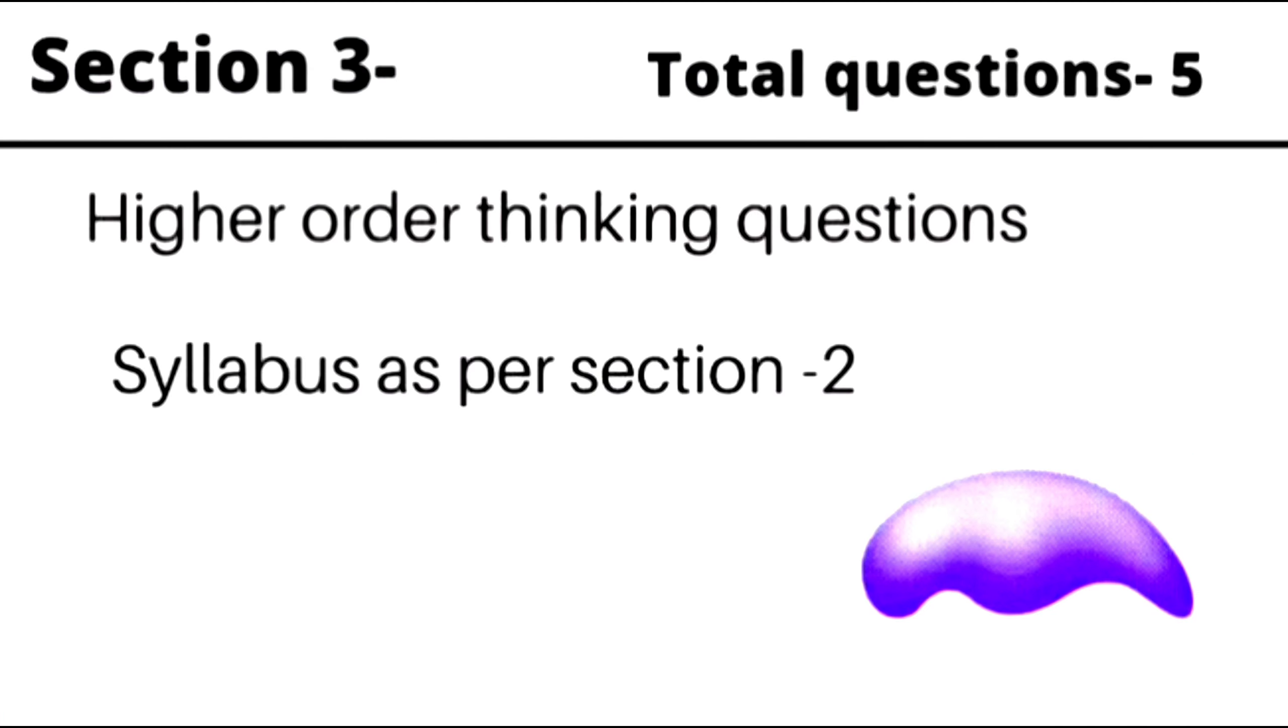Now if we talk about Section 3, the total questions are 5. And what are these? Higher order thinking questions, HOTS. So these are the questions that you will see here. And these questions are according to Section 2. In Section 2 we have seen physics, chemistry, and biology syllabus. So there are 5 higher order thinking questions.